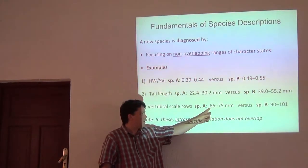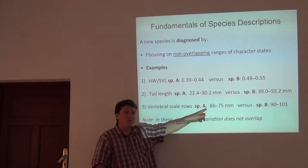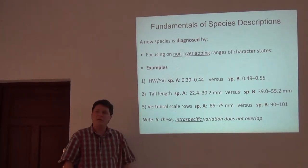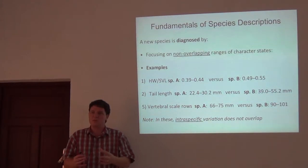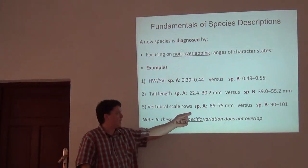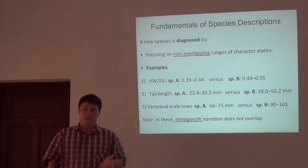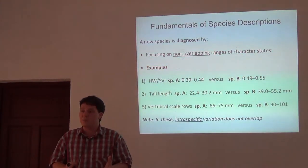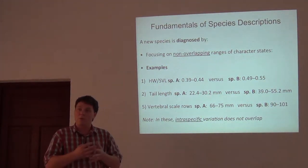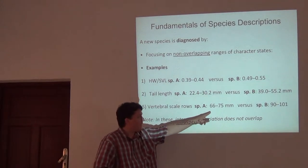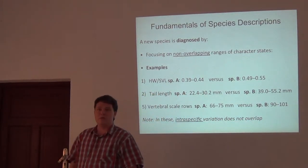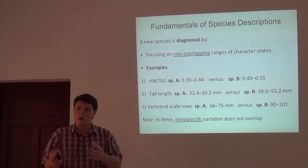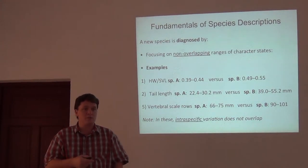The really important thing is that you're focusing on a range of intraspecific — within-species — variation, and what we're trying to show is that intraspecific variation within species A versus species B doesn't overlap. This gets back to the importance of sample size — not focusing on single specimens whenever possible. If we can have 10 specimens, or better yet 25 or 30 specimens in our sample, and we measure them or count scales on all of them and they don't overlap, that's really strong evidence that you have a new species. It's not rocket science — just having a couple specimens in one jar and a couple in the other and counting scales down their back.